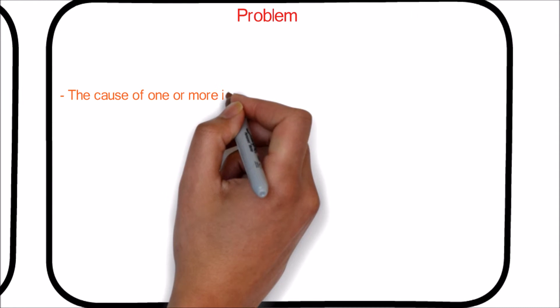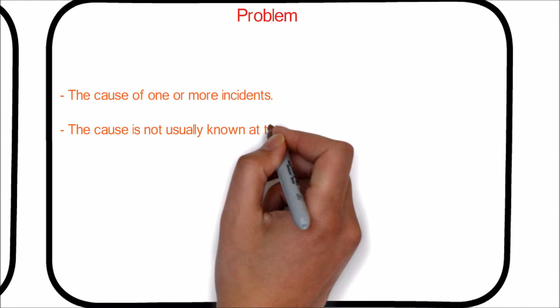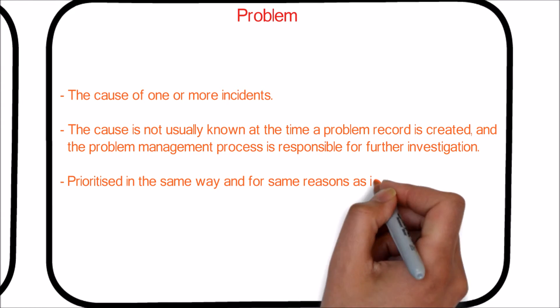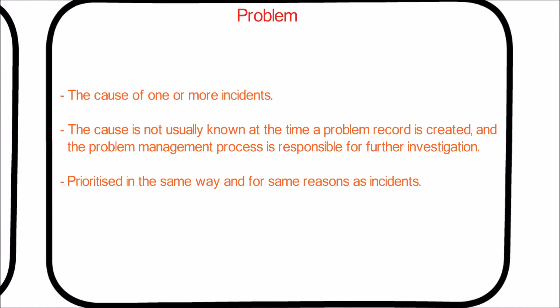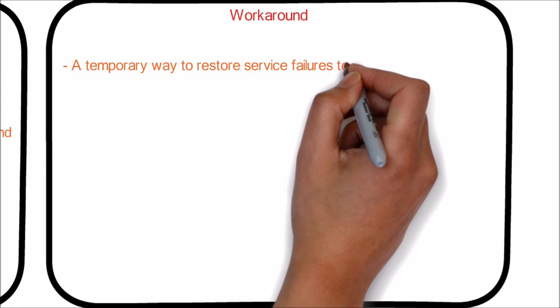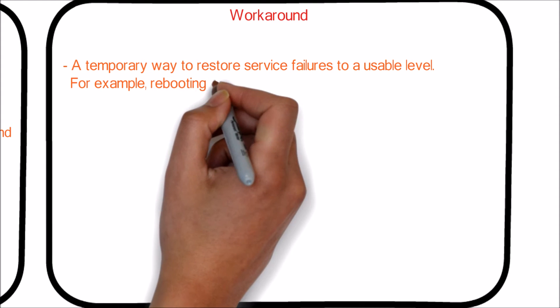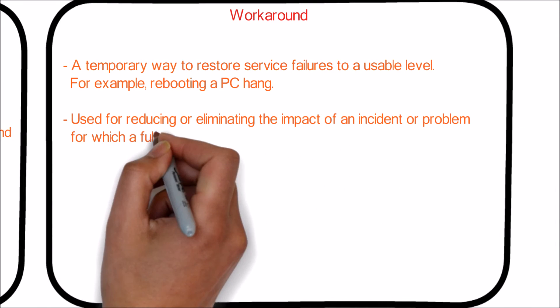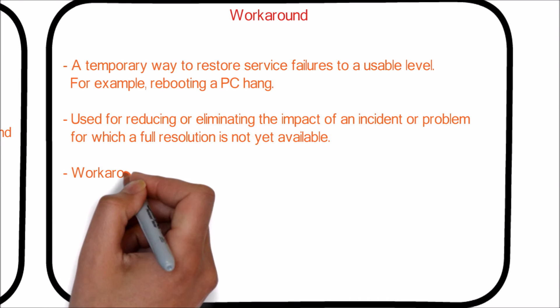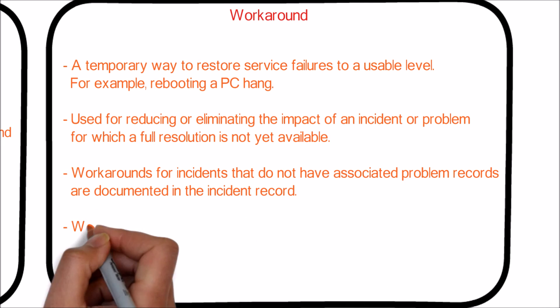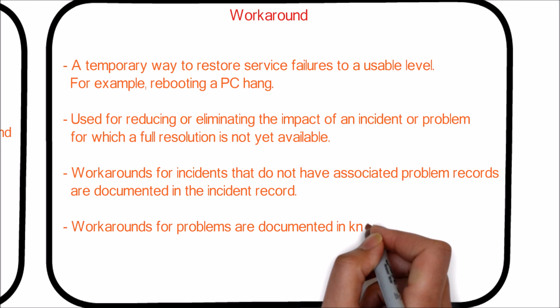Problem can be defined as the cause of one or more incidents. The cause is not usually known at the time a problem record is created, and the problem management process is responsible for further investigation. Problems are prioritized in the same way and for the same reasons as incidents. A workaround is a temporary way to restore service failures to a usable level — for example, rebooting a hung server. Workarounds are used for reducing or eliminating the impact of an incident or problem for which a full resolution is not yet available. Workarounds for incidents without associated problem records are documented in the incident record; workarounds for problems are documented in known error records.